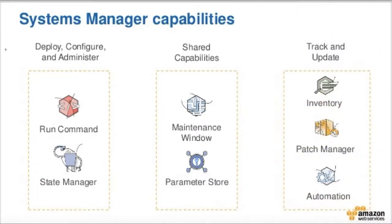System Manager has three main capability areas: deploy, configure, and administer. Using Run Command, you can execute a command across 100 or 200 EC2 instances at once. State Manager tracks the current state and moves instances to a target state — for example, from version 1 to version 2. Maintenance Windows allow you to schedule a timing window to install OS patches and apply updates.